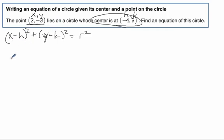So let's plug them in. So we get 2 minus and the h is a negative 4. Quantity squared plus the y is a negative 3 and it's minus k. k is 3. And we don't know the r squared. That's what we've got to figure out.